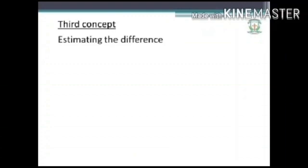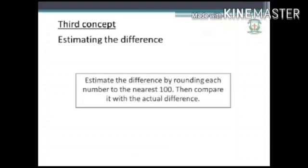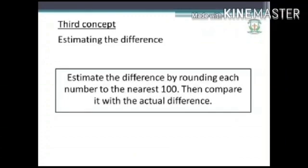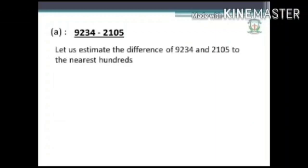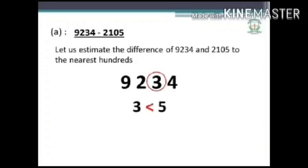Let us take up the third concept: estimating the difference. Estimate the difference by rounding each number to the nearest hundred, then compare it with the actual difference. Example: 9234 minus 2105. In 9234, the digit at the tens place is 3, which is less than 5, so 9234 can be rounded off to 9200.